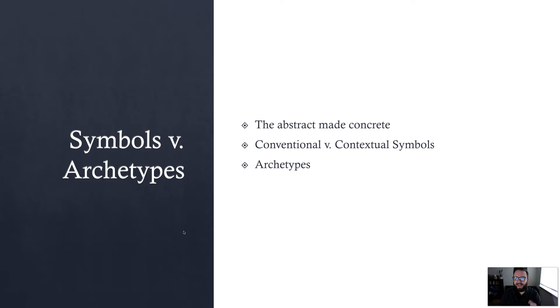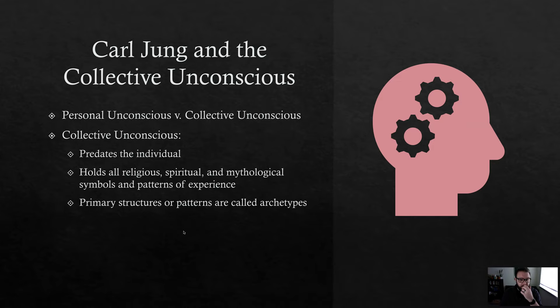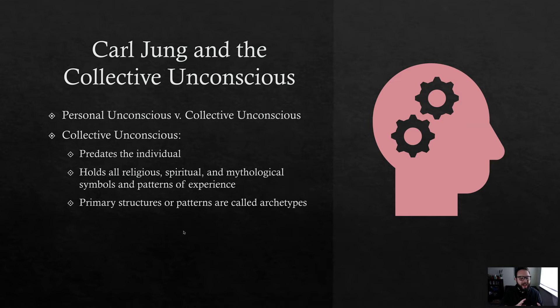Archetypes, on the other hand, are kind of like conventional symbols, except they go a lot deeper. They come out of what Carl Jung, a psychologist, calls the collective unconscious. The collective unconscious, as opposed to the personal unconscious — the stuff each one of us individually has floating around unknowingly in the back of our minds — the collective unconscious predates all of us as individuals and holds everything: every aspect of our history, all of our religious, spiritual, and mythological symbols, every pattern of experience. Everything that makes humans human is contained within this collective unconscious. The patterns or structures we see coming out of it over and over again are called archetypes.